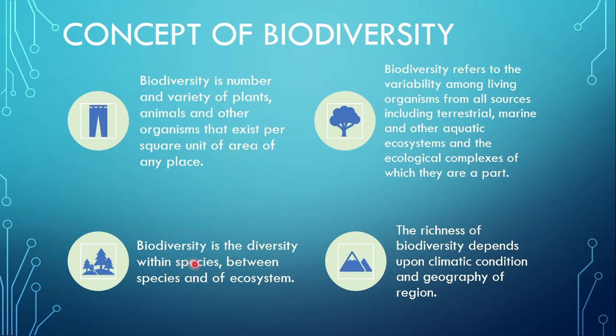Let's go to the next definition. Biodiversity is the diversity within species, between species, and of ecosystem — you have to remember these three main things. Within the species, there are different species: human, animal, plant species, and there is diversity within their own species. Between two species there is difference. And diversity of ecosystem means there is diversity in ecosystems as well. So these three types of diversity are included under biodiversity.